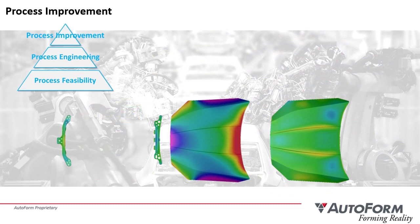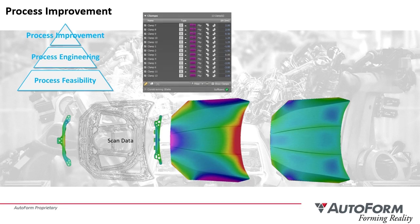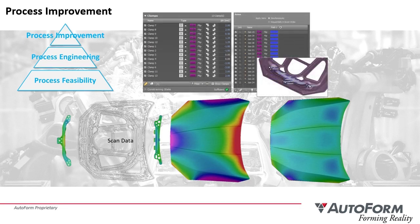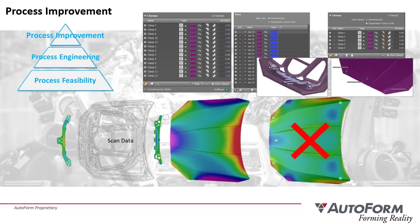Process improvement lets users replace earlier data with scan problem-part results. They can then make adjustments to clamp strategy, join location or sequence, or measurement method. Through this study, users may find a combination of process modifications that yield a better assembly result, which can then be reflected to the actual process. If a solution cannot be found, the received parts may not be suitable for production.